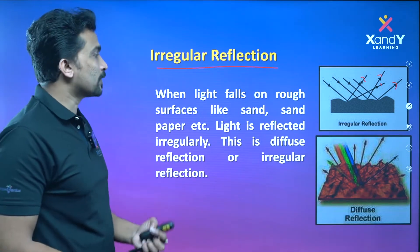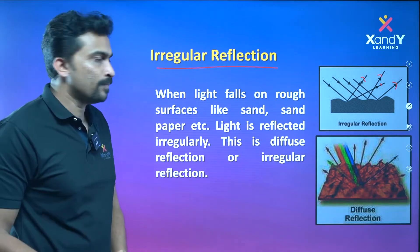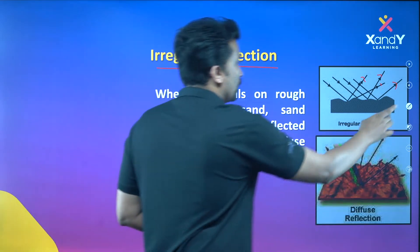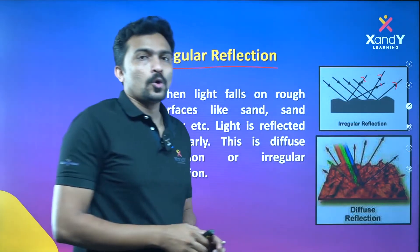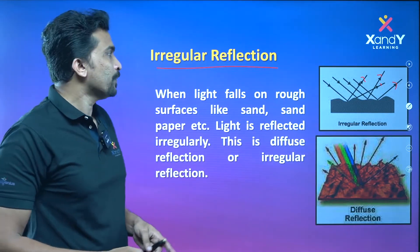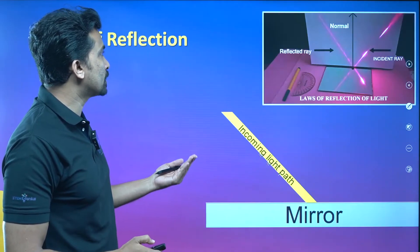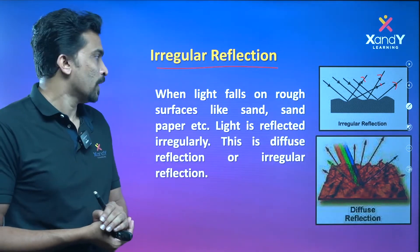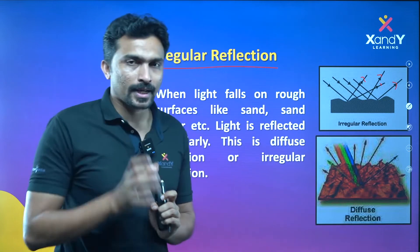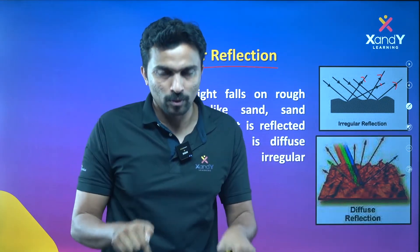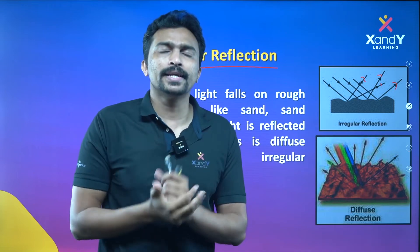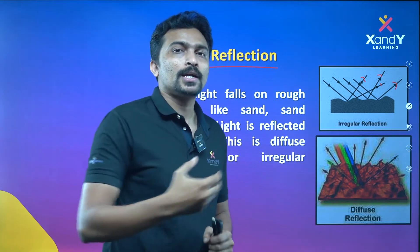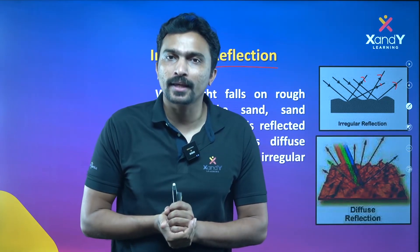When light falls on rough surfaces like sand or sandpaper, light is reflected irregularly — this is known as diffuse reflection or irregular reflection. These are the properties of visible light — wonders of visible light. We will talk about the laws of reflection and their applications next. If you have questions, put them in the comments box; we will definitely answer. We will also come to live classes. Goodbye.